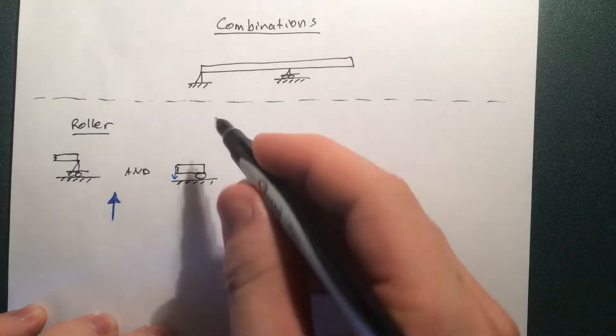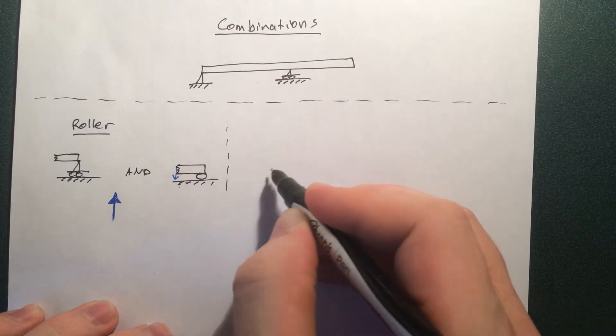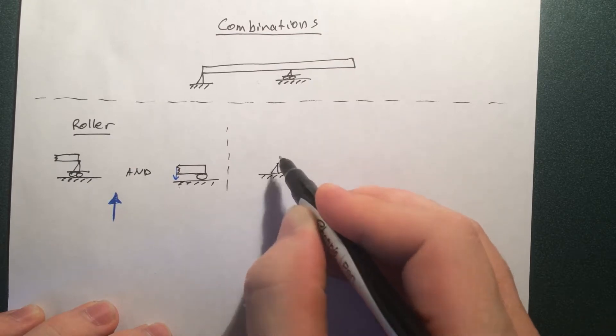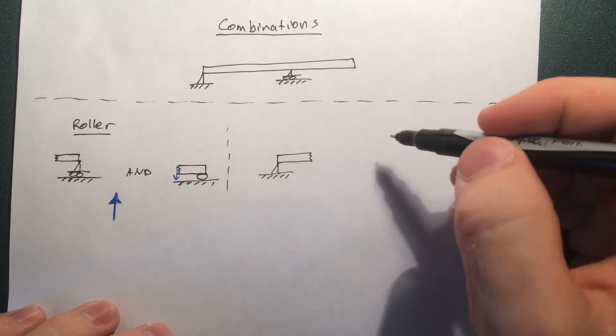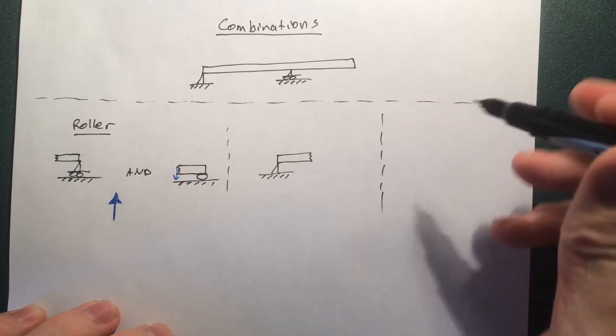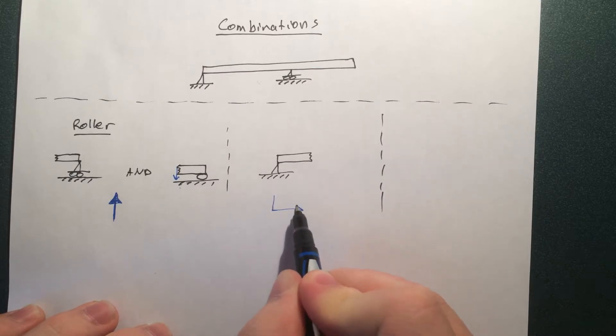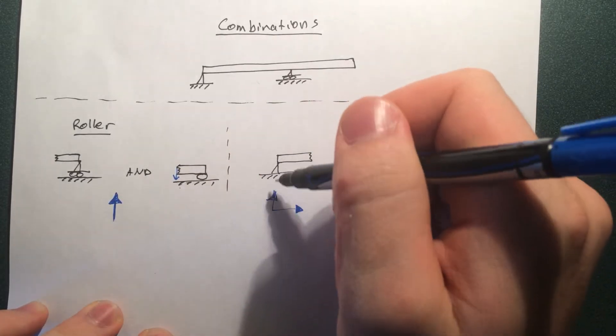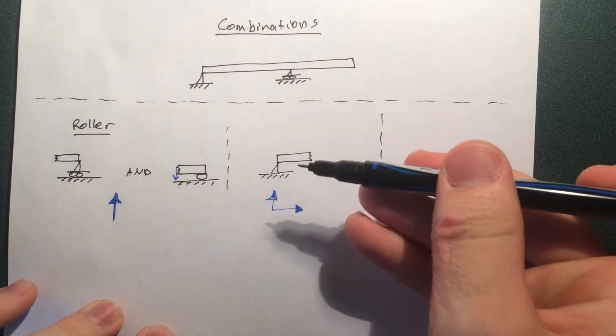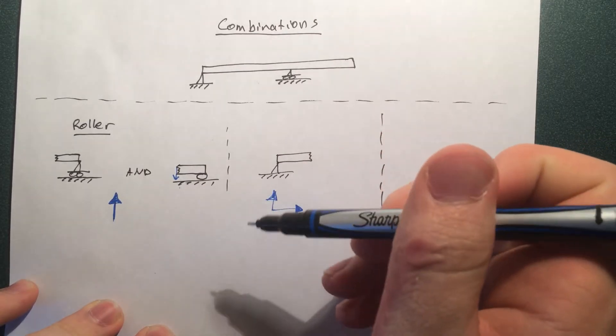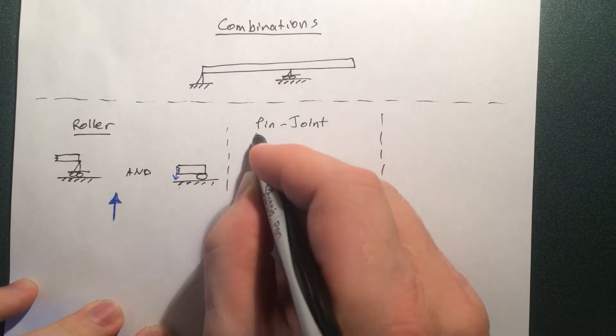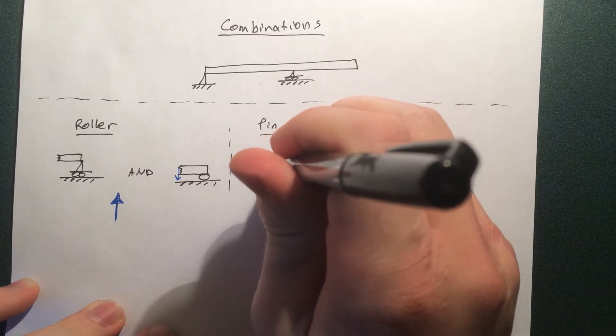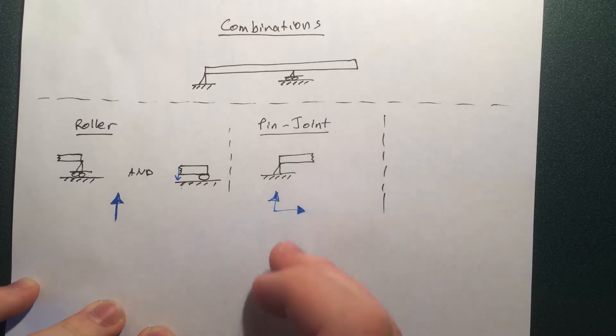So the next type is this here, this type of support. And I'm not quite sure what to call it, it's not fixed. But this one can resist forces in either direction. And you can see why. It's got the same properties as this. You push it down, it's going to push back. And then when we push it this way, it's not free to roll over top, it's fixed here.